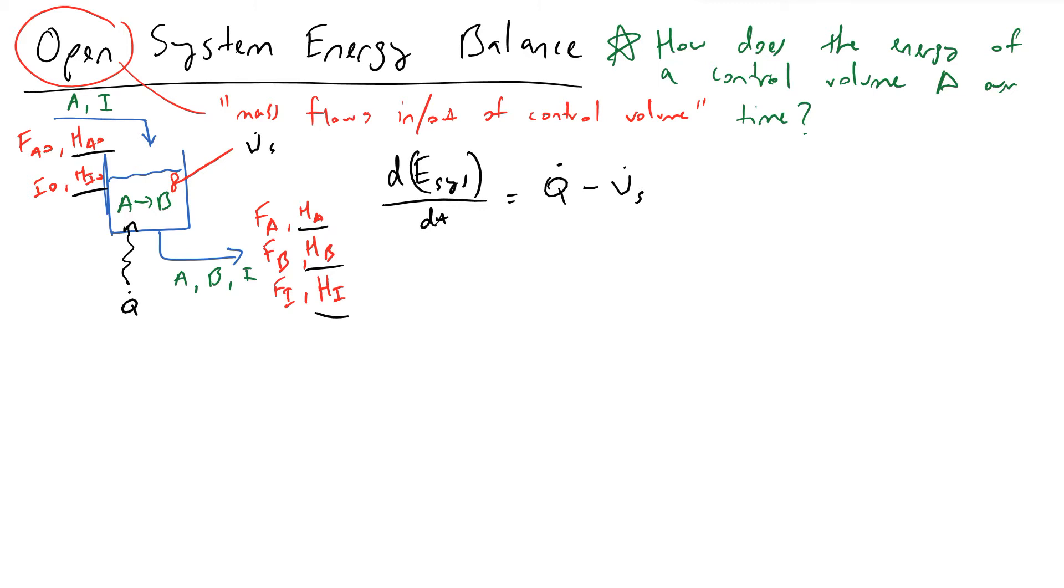And then now is the part where we make this an open system and we account for how the mass and the enthalpy of our inlet and outlet streams accounts for or changes the energy inside of our control volume.